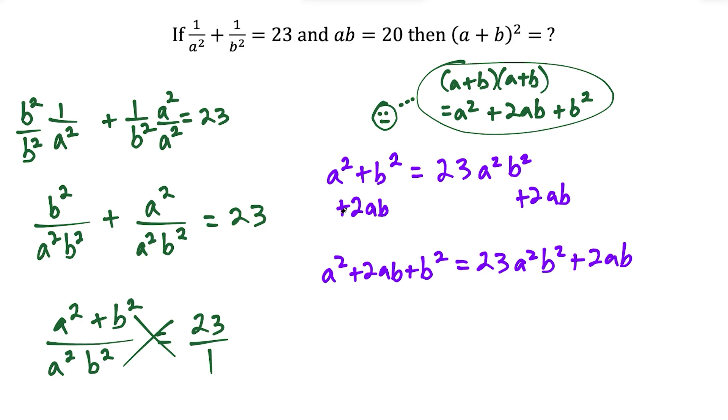So now I could factor this. I'm going to write the left side as a plus b in parentheses squared. And this is what we actually want to find. So we would have 23 times, and instead of a squared b squared, I'm going to call this ab in parentheses squared, and then we have plus 2ab.